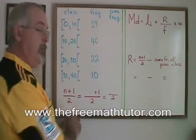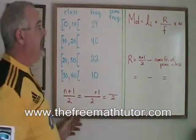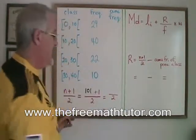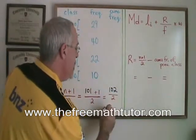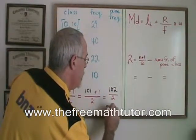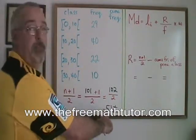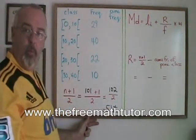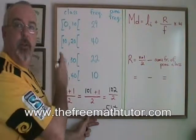First we do our usual median formula, n plus 1 over 2. Since there is a total of 101 couples that have been surveyed, I am writing 101 plus 1 over 2, which is equal to 102 over 2, which is equal to 51. That tells me that the median is not 51. It is the 51st data value out of the 101 that have been collected if we list the data values from the lowest number to the largest.